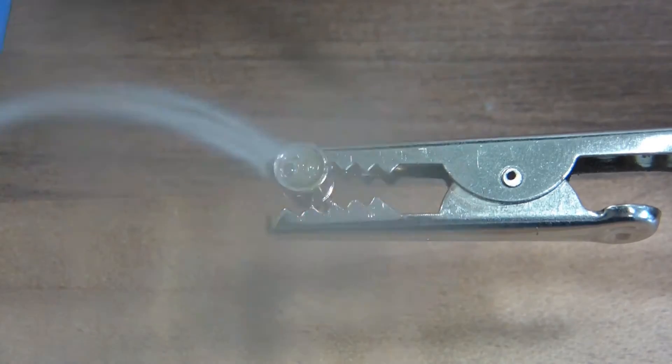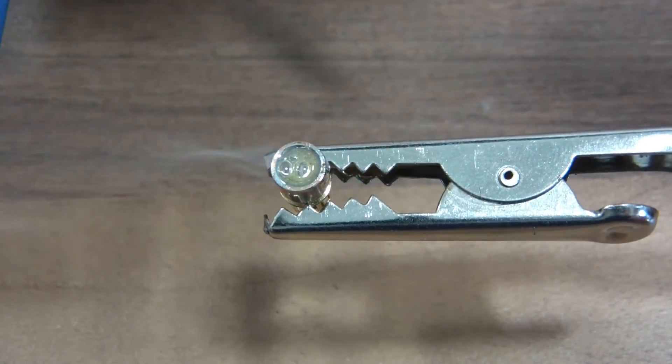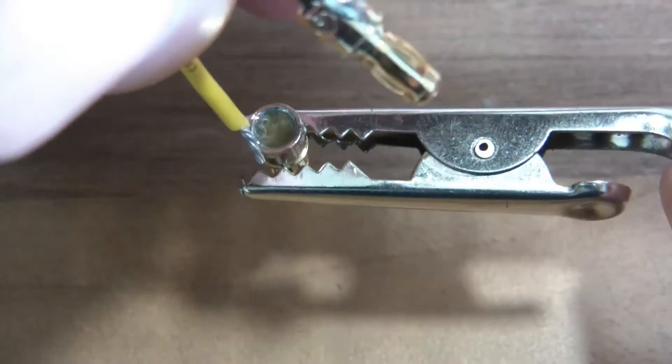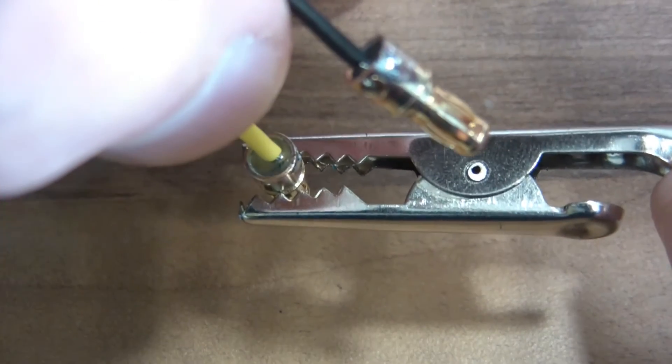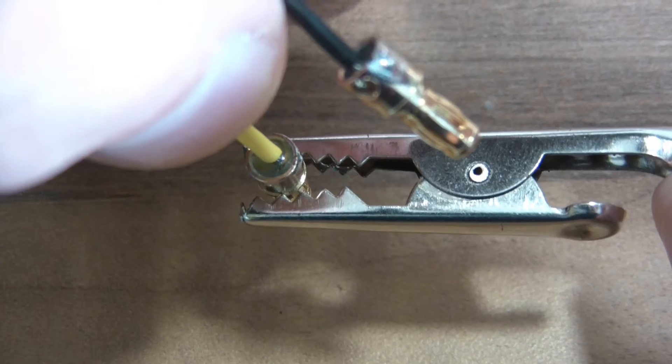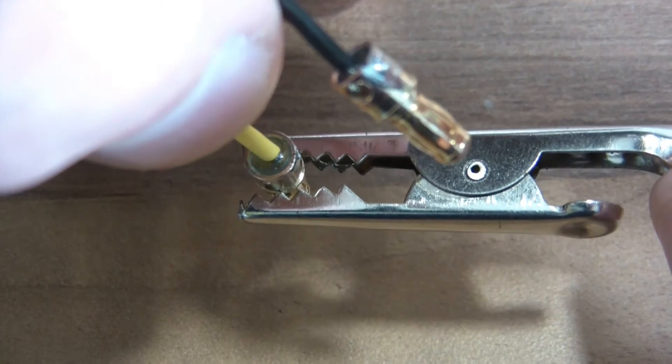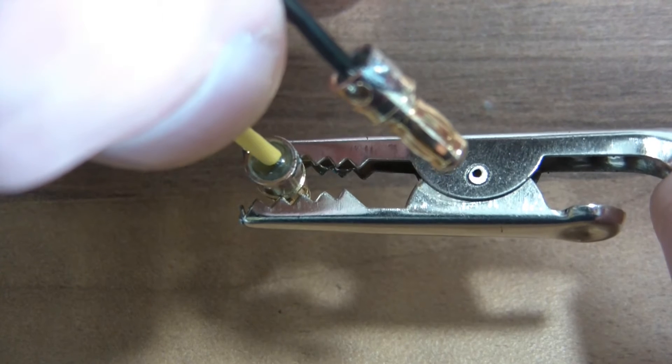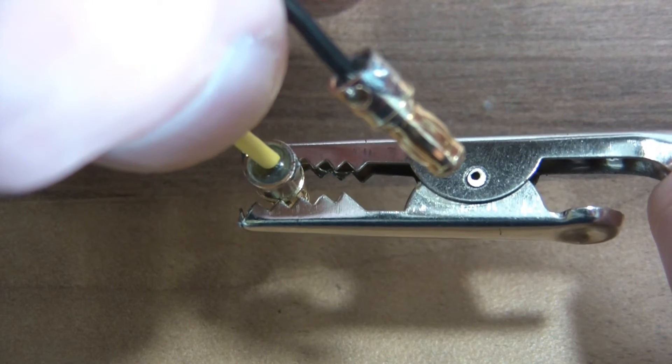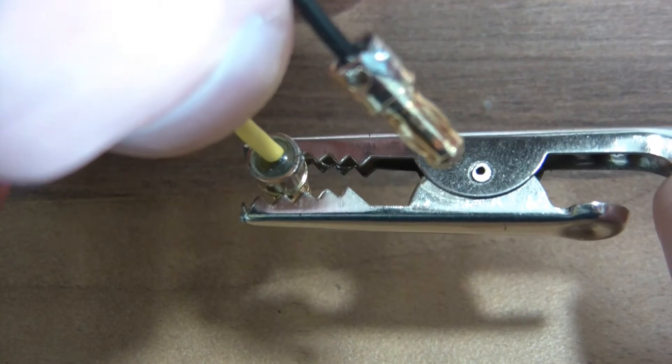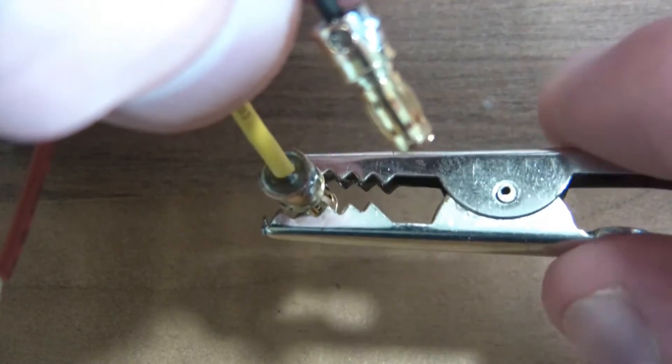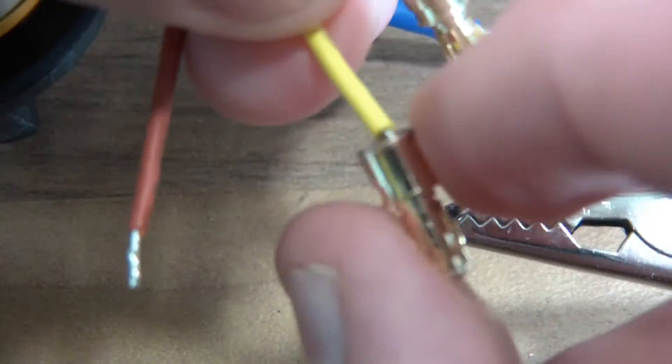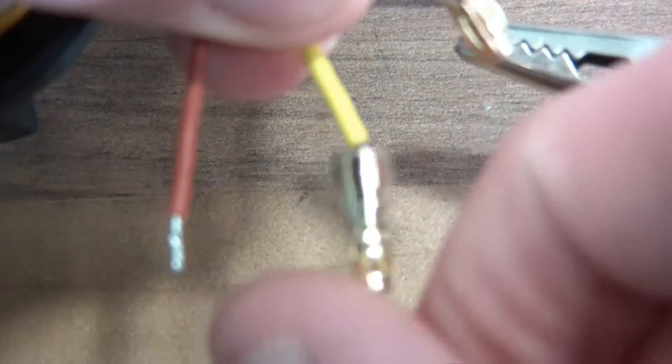And then quite quickly before it dries or sets, I'll just put the yellow wire in and hold it there for 30 seconds or so. And it's done. And it's still very hot too.